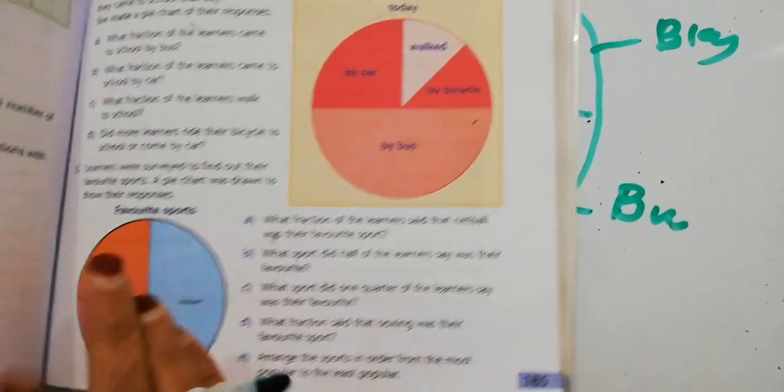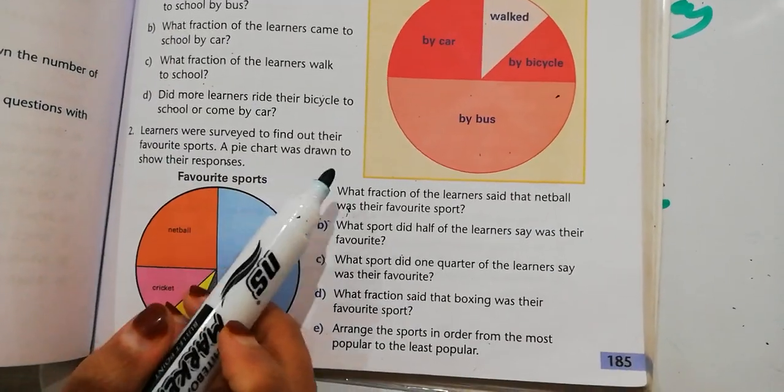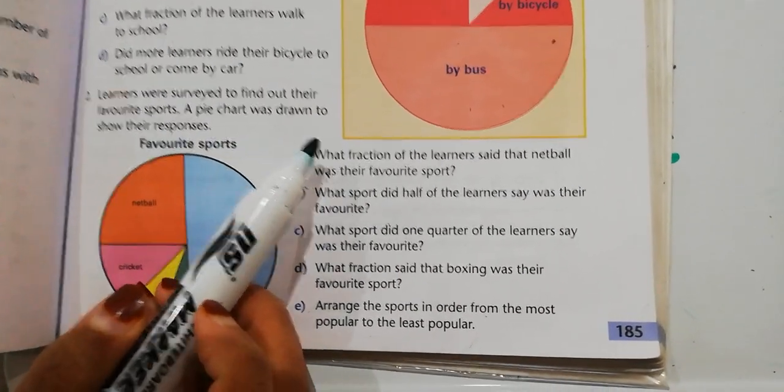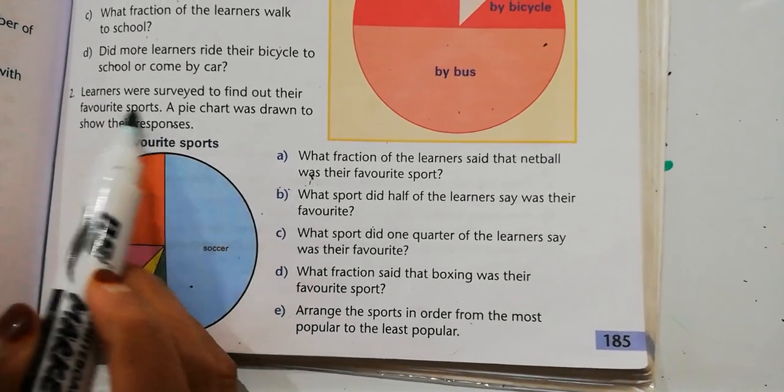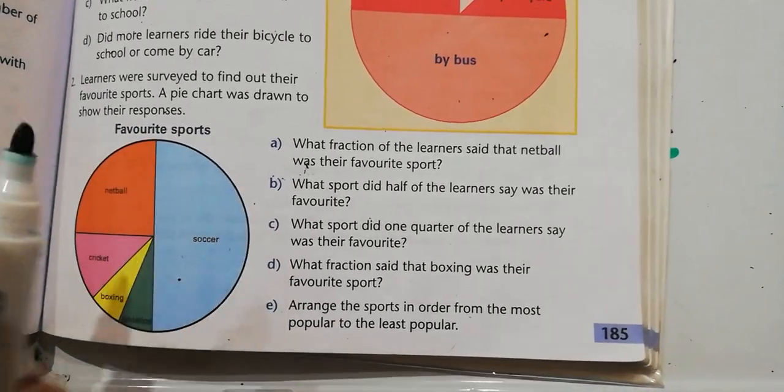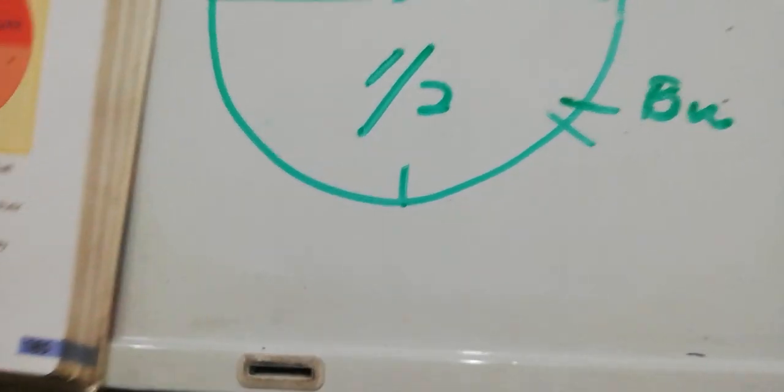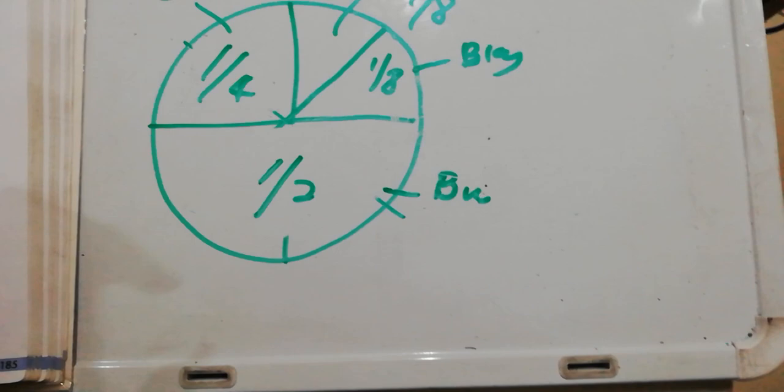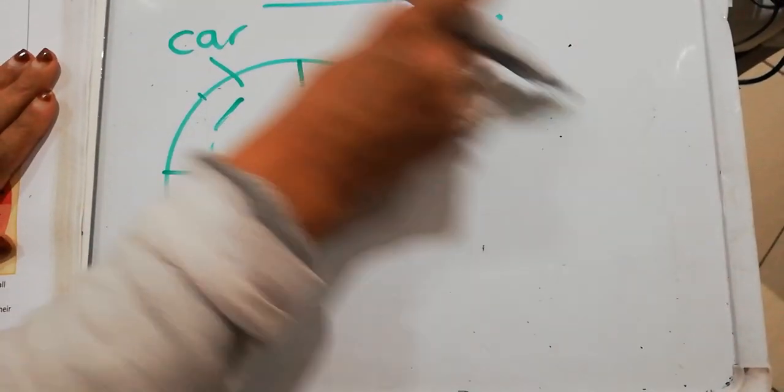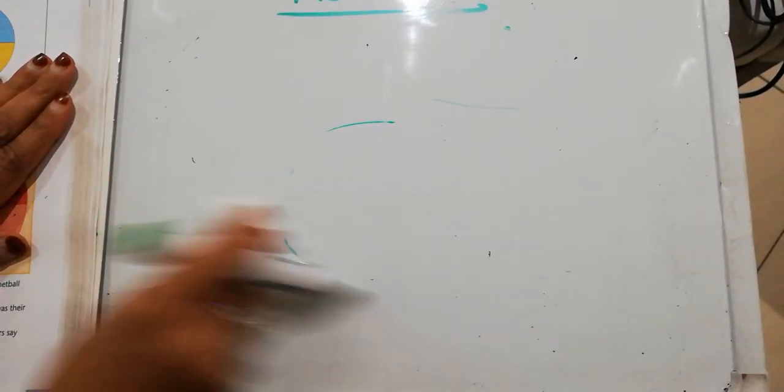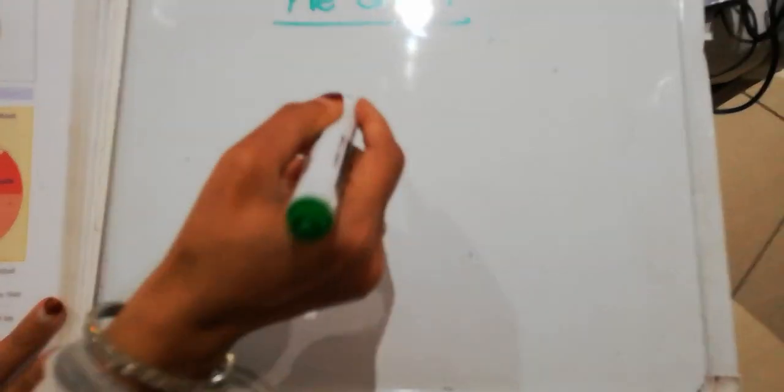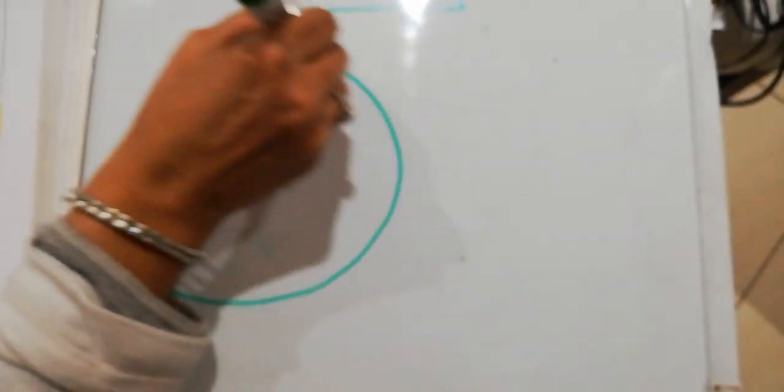Let's go to number two. Learners were surveyed to find out their favorite sports. A pie chart was drawn to show the responses. Again, notice the heading favorite sports: soccer, netball, cricket, boxing, and athletics. Now let's draw this graph as well.